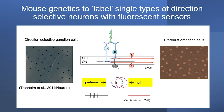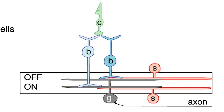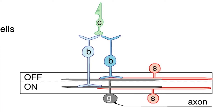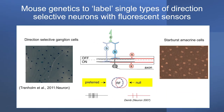With mouse genetics, we can get a detailed picture of how this computation is happening. We can genetically label ganglion cells and also label the starburst amacrine cells, shown in red — these are inhibitory neurons. The ganglion cell receives excitatory information from photoreceptors via bipolar cells and combines it with inhibition from starburst amacrine cells. Destroying starburst amacrine cells leads to a complete loss of direction selectivity, so they are critical for the computation. Direction selectivity actually occurs in the starburst cell before it occurs in the ganglion cell.